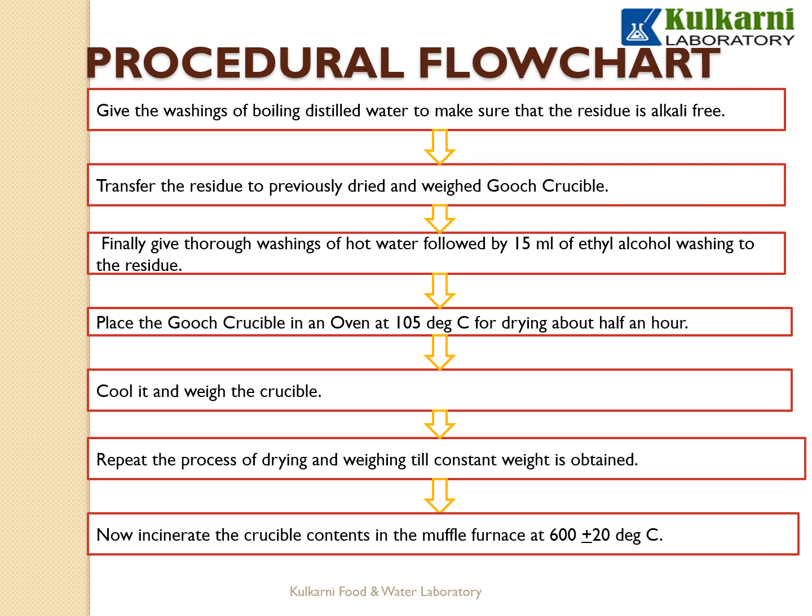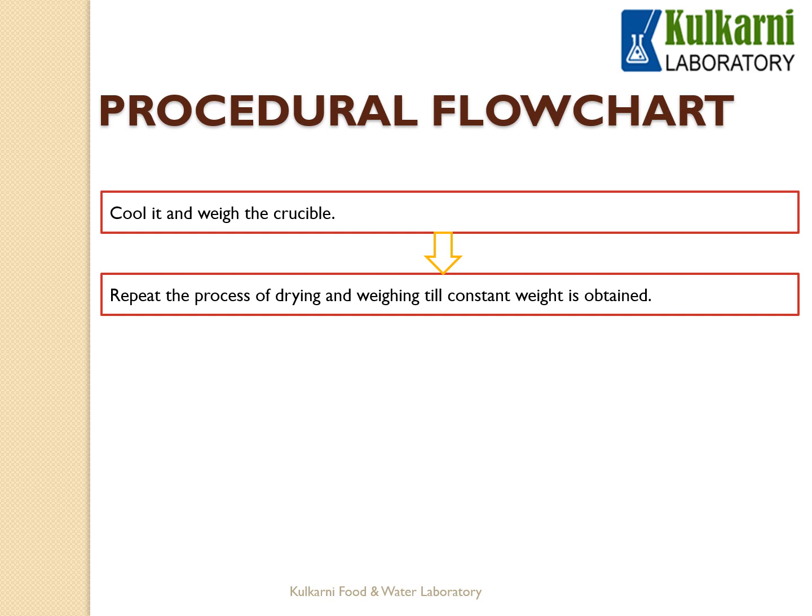Make sure the residue is alkali-free. Transfer the residue to a previously dried and weighed gooch crucible. Give thorough washings of hot water followed by 15ml of ethanol washings. Place the gooch crucible in an oven at 105°C for about half an hour for drying. Cool and weigh the crucible, repeating drying, cooling, and weighing until a constant weight is obtained. Then incinerate the crucible in the muffle furnace at 600°C ± 20°C, cool and weigh, again repeating until constant weight is obtained.